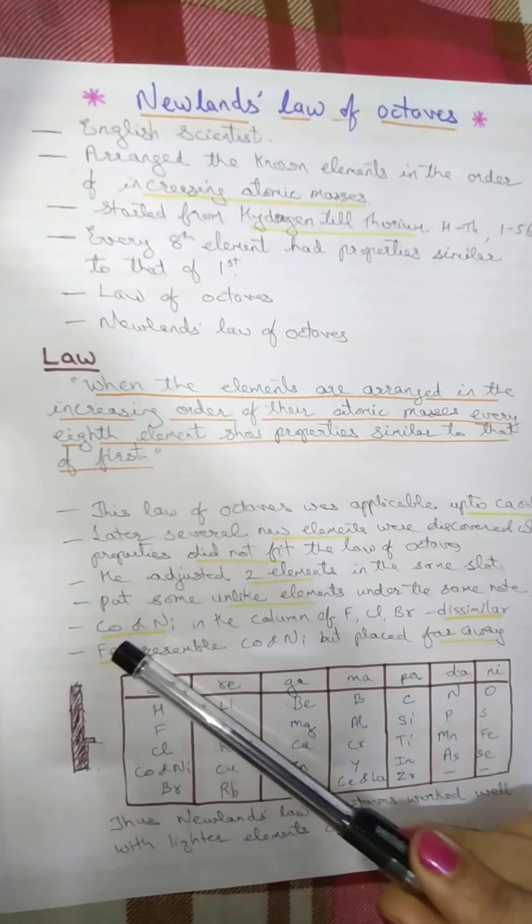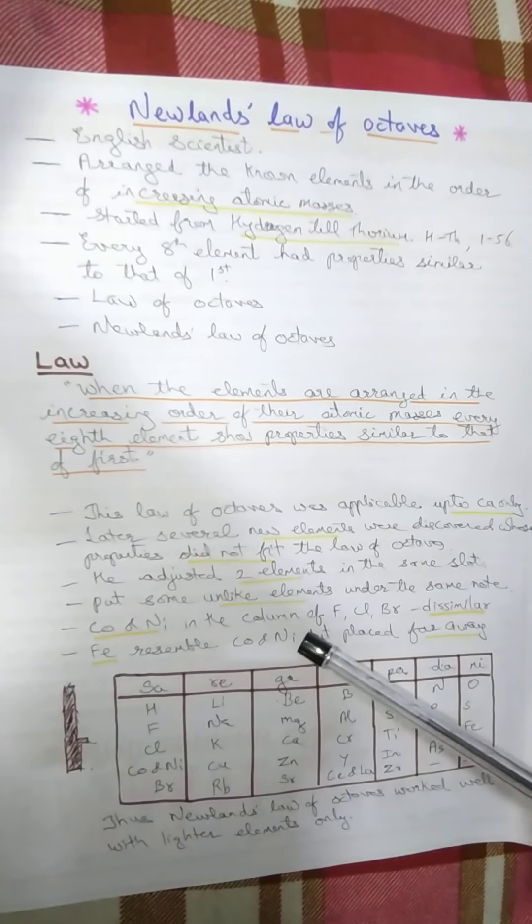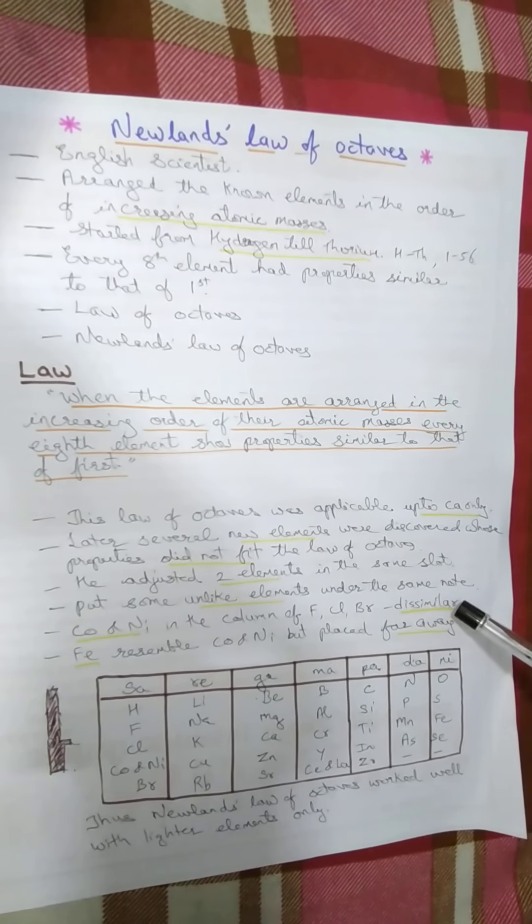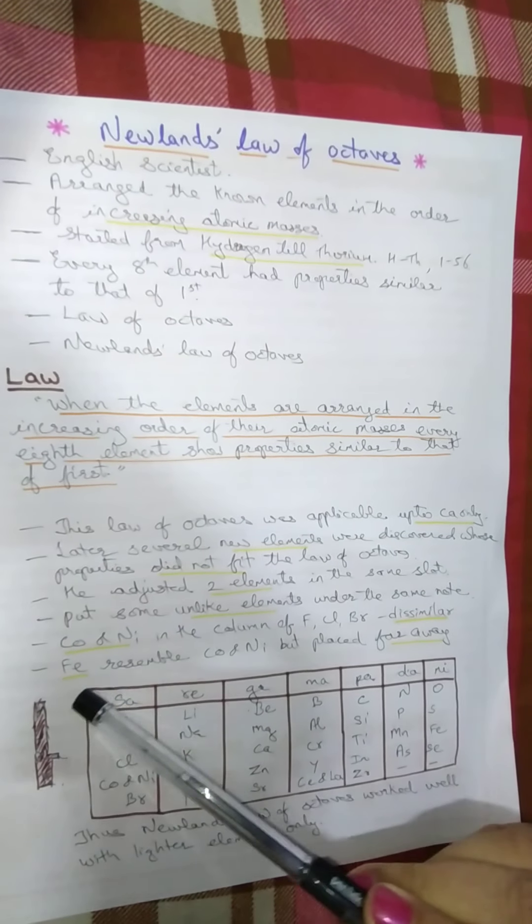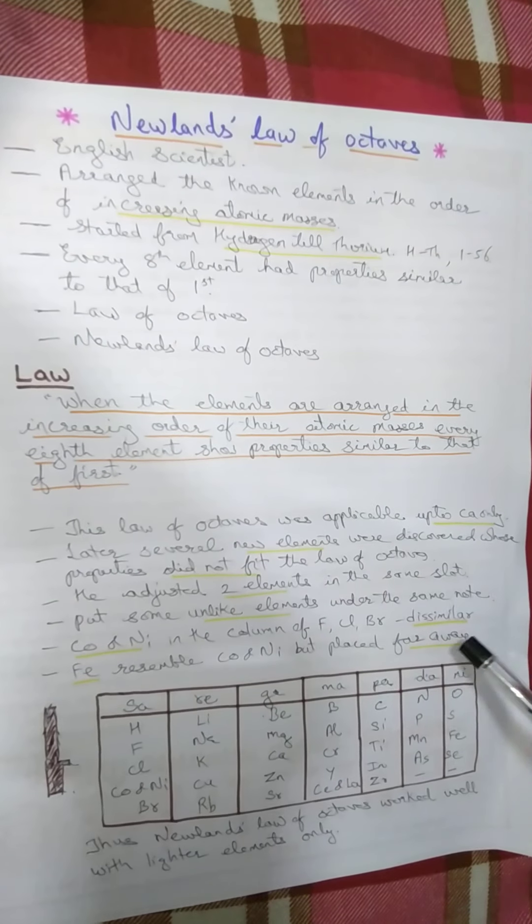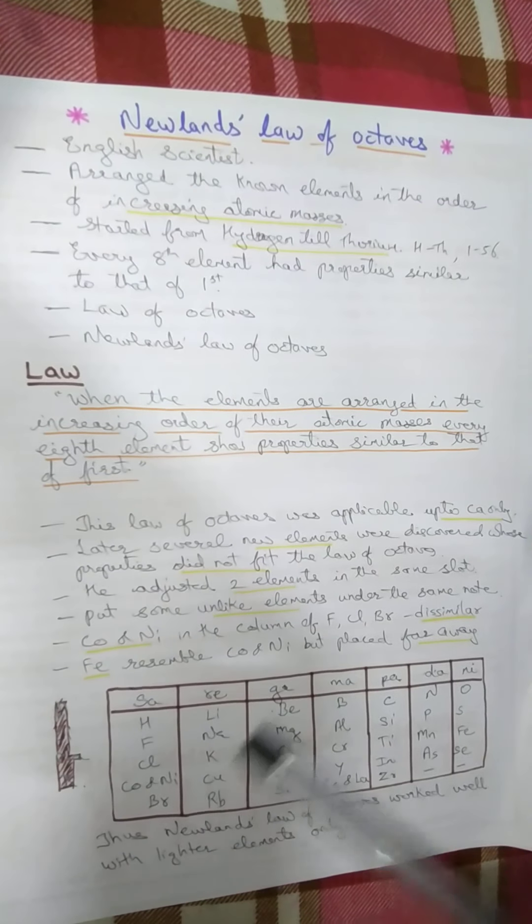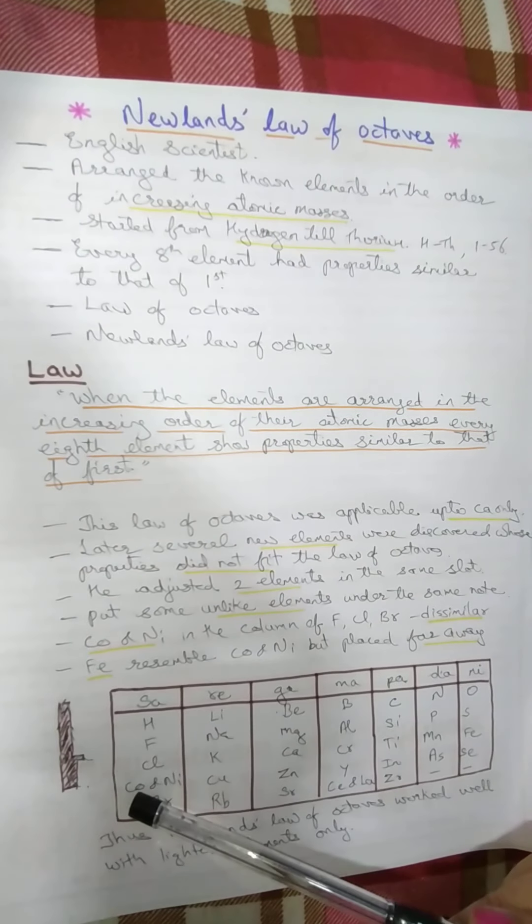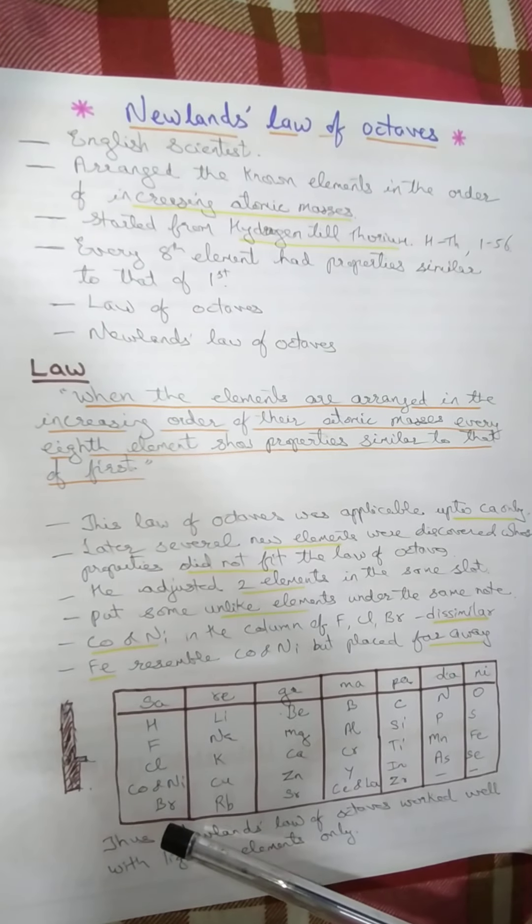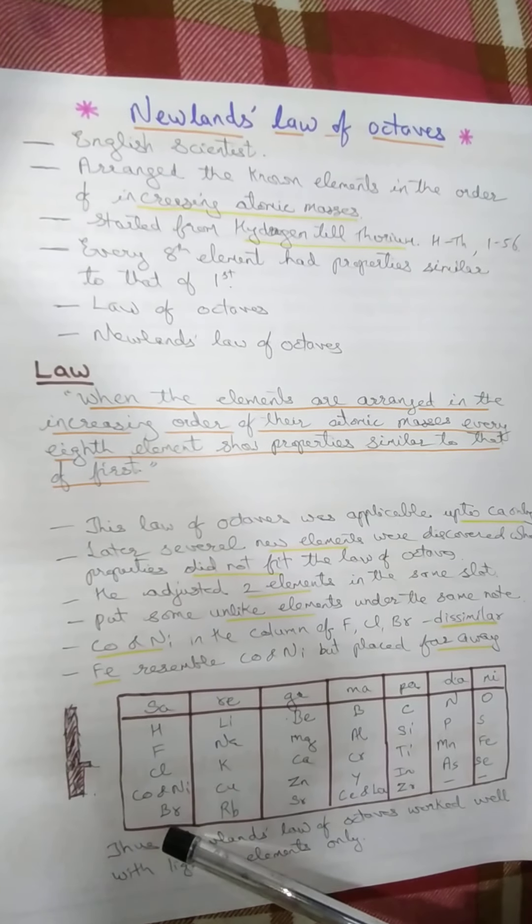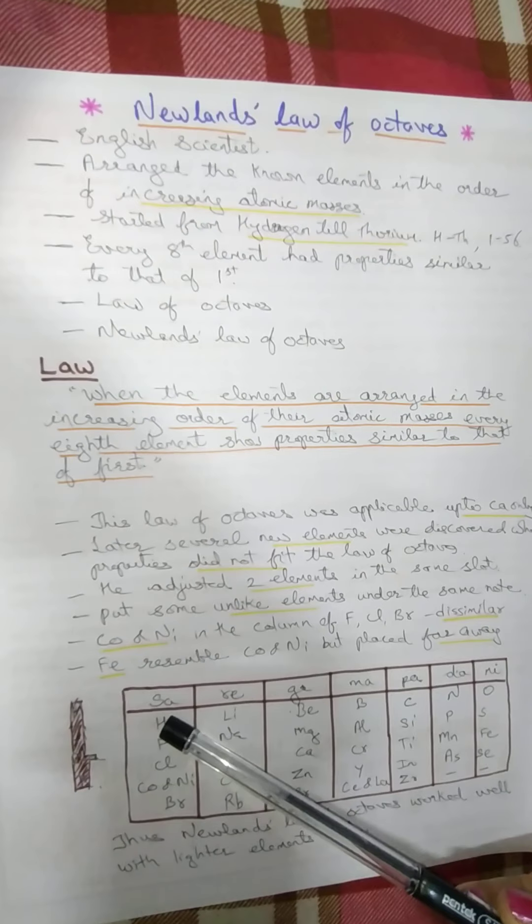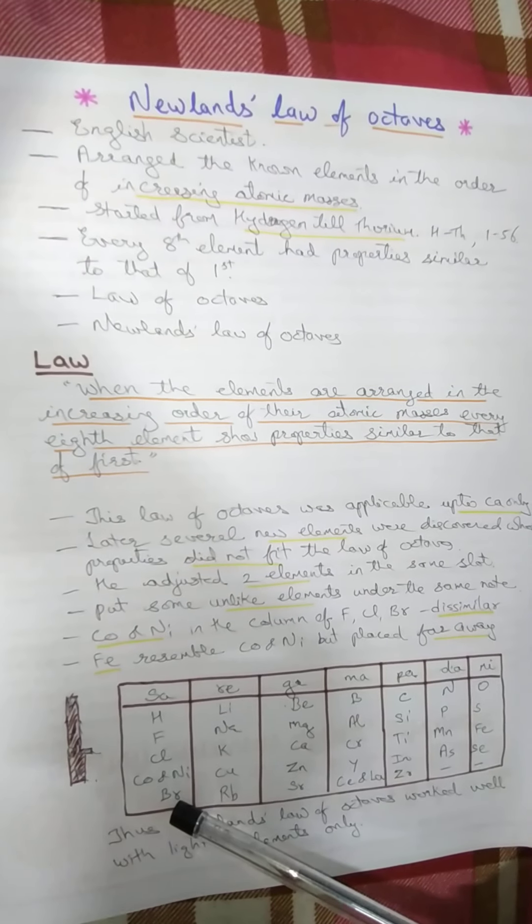Also, cobalt and nickel was put in the same column of fluorine, chlorine and bromine, which showed dissimilar properties. Iron resembled cobalt and nickel but it was placed far away from them. Cobalt and nickel did not show similar properties to hydrogen, fluorine, chlorine and bromine. Hence, this was his mistake.